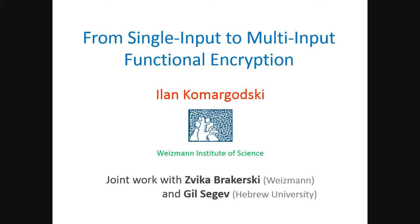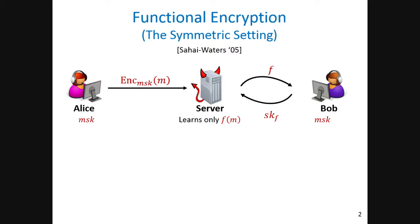I'll talk about multi-input functional encryption, joint work with Zvika Barkersky and Gil Segev. Let me briefly remind you the setting of functional encryption. In functional encryption, there is a player, Alice, that has a master secret key. She can encrypt messages at any time she wants, send them to some server, and at some later time, a player named Bob — it can be Alice as well — has a secret key. He can generate keys for functions that allow the server to learn some partial information about the message M.